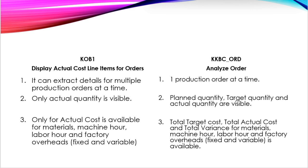In KOB1, you can view actual production quantity, while in KKBC-ORD, you can view planned quantity, target quantity, and actual quantity of a production order.